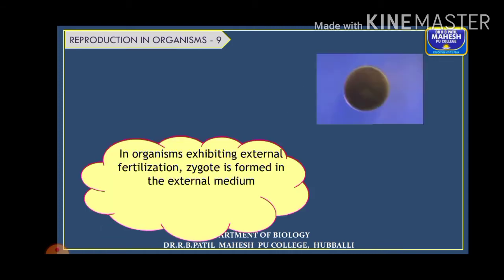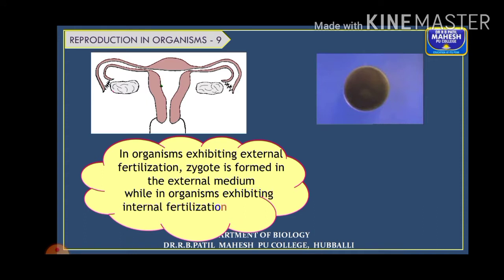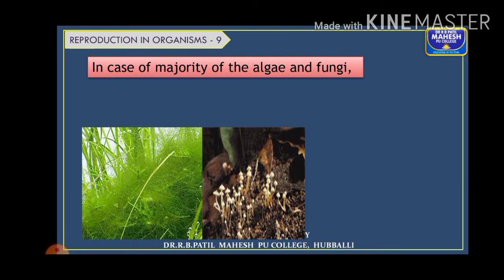In organisms exhibiting external fertilization, the zygote is generally formed in an external medium — most often water — because the gametes are discharged outside the body. Whereas in organisms exhibiting internal fertilization, the gametes are discharged inside the body of the parent, so fusion takes place there and the zygote is formed inside the body itself.